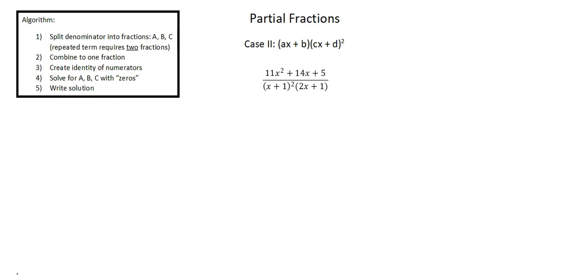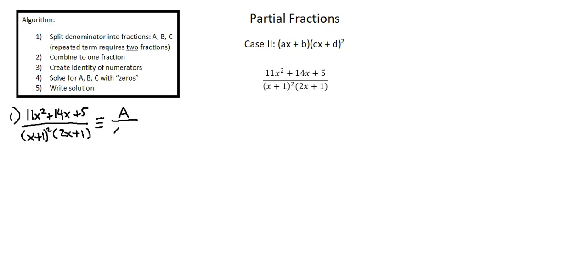Step 1: split denominator into fractions a, b, c. Note that the repeated term requires two fractions. So 11x squared plus 14x plus 5 over x plus 1 squared times 2x plus 1 is an identity with a over x plus 1 to the power of 1, b over x plus 1 squared, and our third fraction c over 2x plus 1.